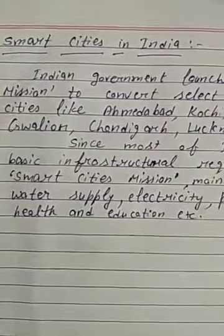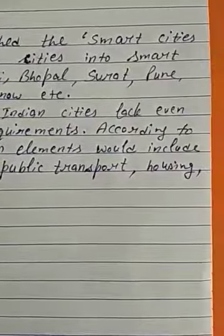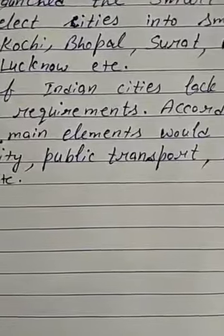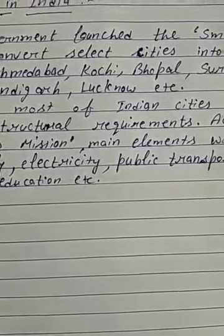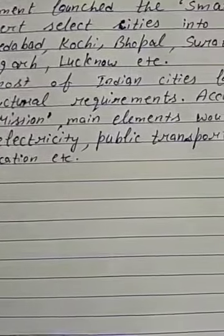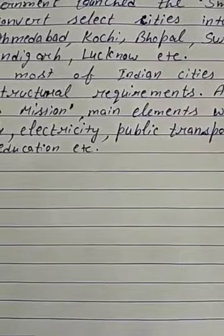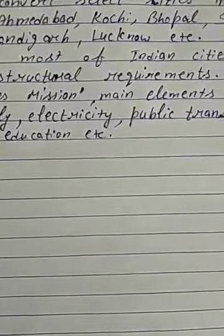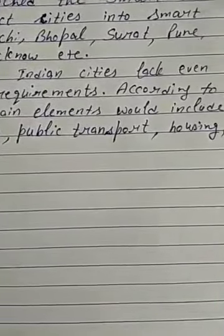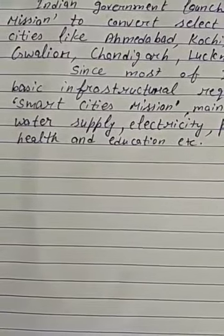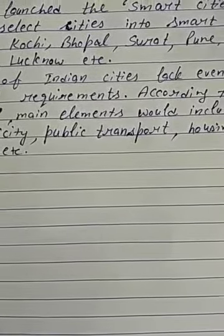Now moving towards India — the Indian government launched the Smart Cities Mission to convert select cities into smart cities, like Ahmedabad, Kochi, Bhopal, Surat, Pune, Gwalior, Chandigarh, Lucknow, etc. Since most Indian cities still lack even basic infrastructure requirements, the main elements of the Smart Cities Mission would include water supply, electricity, a good public transport system, and housing.